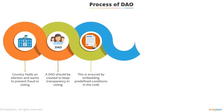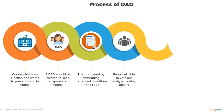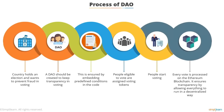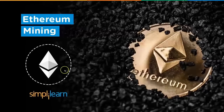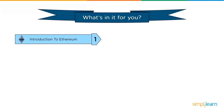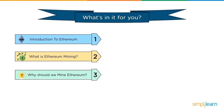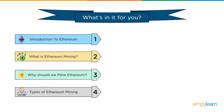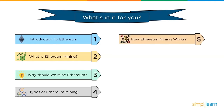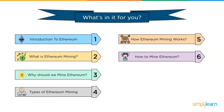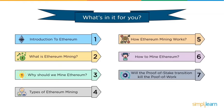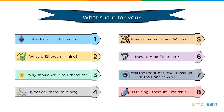People eligible to vote are assigned voting tokens and the voting starts — every vote is processed on the Ethereum blockchain, ensuring transparency by running everything in a decentralized way. In this section we will explore Ethereum mining. First we'll have an introduction to Ethereum, then understand what Ethereum mining is, explore why we should mine Ethereum, look into the types of Ethereum mining, understand how the Ethereum mining process works, explore exactly how to mine Ethereum, discuss whether the proof-of-stake transition will kill proof-of-work, and finally find out if mining Ethereum is profitable.